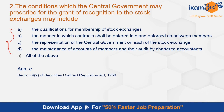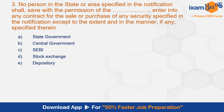Question number 3: 'No person in the state or area specified in the notification shall, save with the permission of [blank], enter into any contract for the sale or purchase of any securities specified in the notification except to the extent and in the manner, if any, specified therein.' The correct answer is B, central government. This is as per section 16 of SCRA, which deals with the power to prohibit contracts in certain cases.